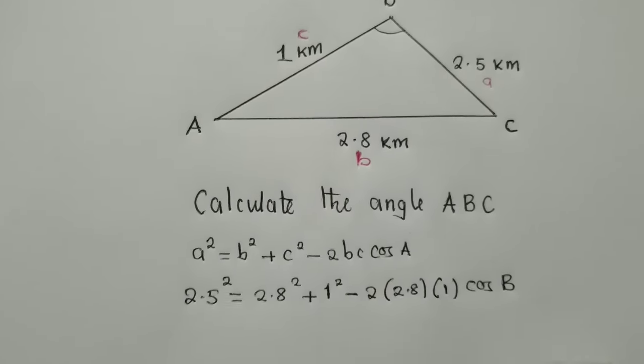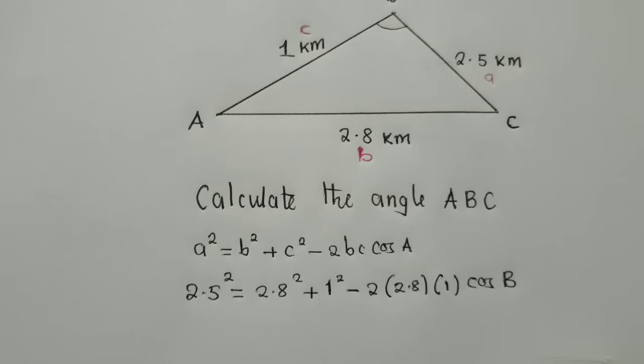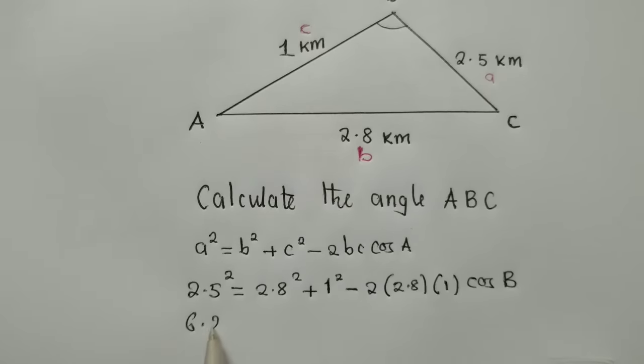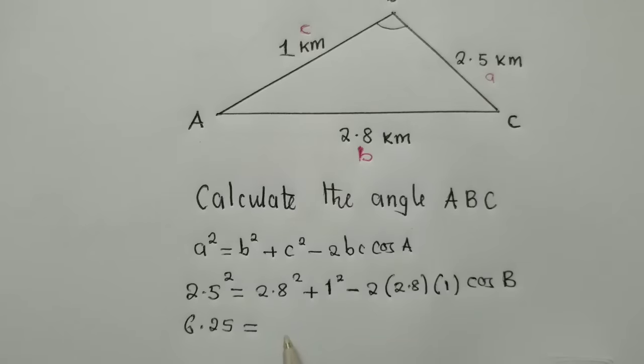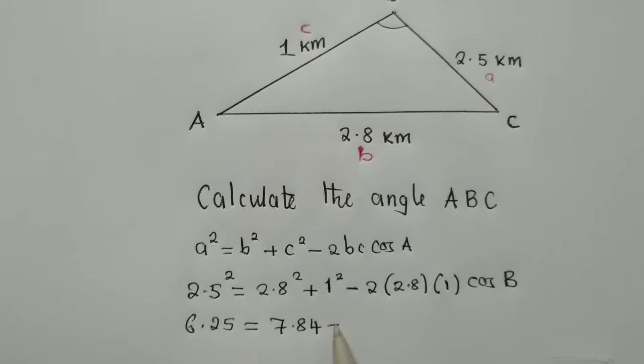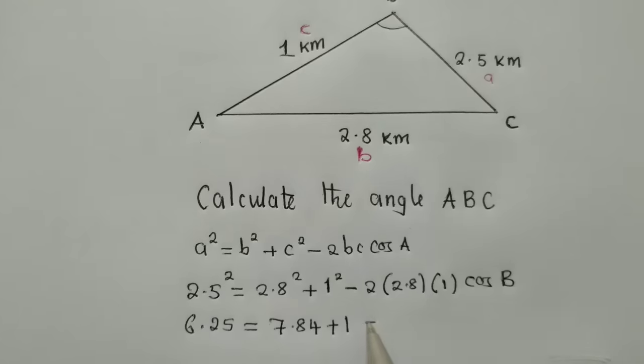After reaching this point, we just now get our calculator. Start punching out things. 2.5 power 2. This is 2.5 times 2.5. It's giving us a 6.25, which is equal to 2.8 power 2, which is 2.8 times 2.8. That is 7.84 plus a 1 minus,